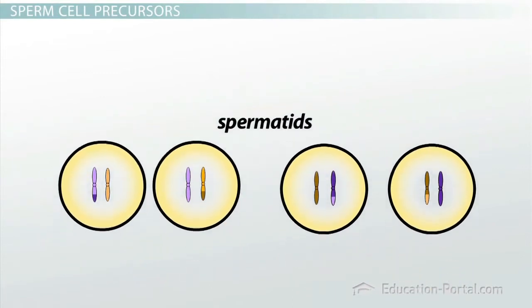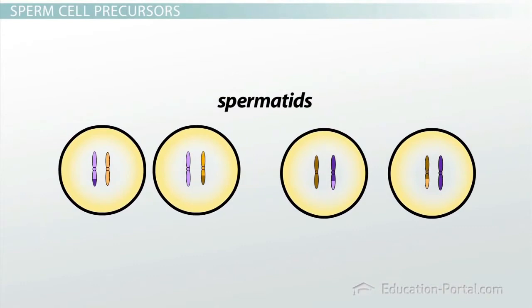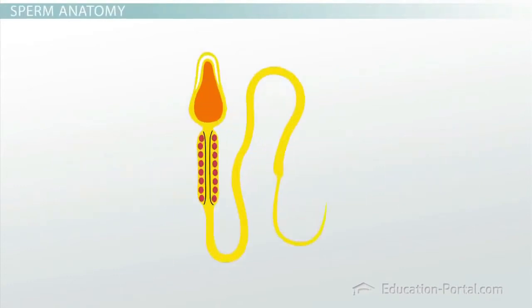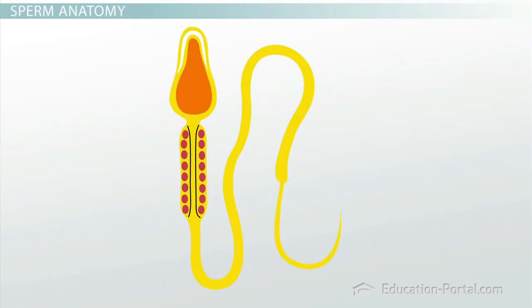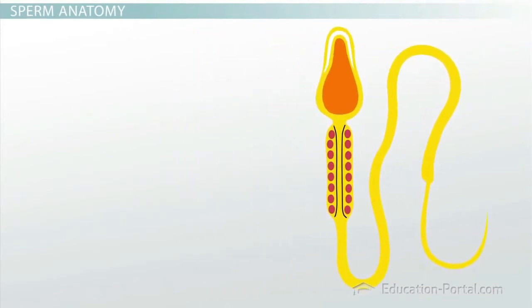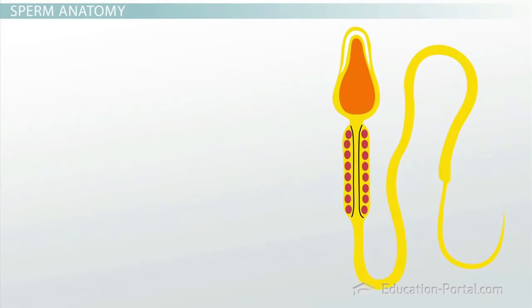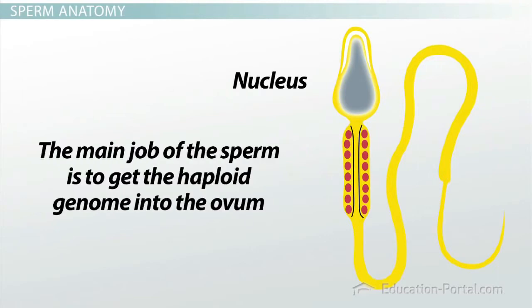These spermatids now have the correct number of chromosomes to be functional gametes, but they don't have the physical characteristics of sperm that allow them to swim to the ovum and fertilize it. A functional sperm looks a lot like a tadpole, but unlike tadpoles, sperm have only three basic components. The nucleus contains the haploid genome and not much else. The main job of the sperm is to get the haploid genome into the ovum.